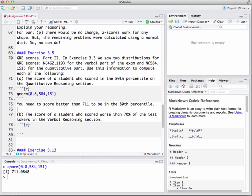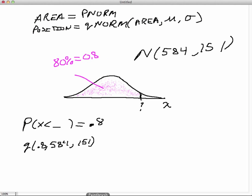So part B, they say the score of the student who scored worse than 70% of the test takers in the verbal reasoning section. Very important. So we're in verbal reasoning this time. So that means we are working with the different normal model, the second normal model that was given to us. So they scored worse than 70% of the test takers. What that means is that 70% of the folks are above them. So let's make a drawing and see if we can get a drawing to make sense of this.